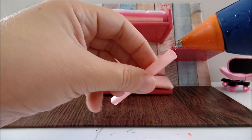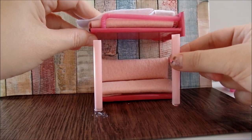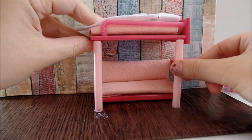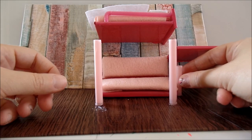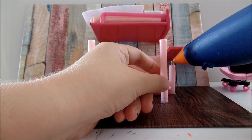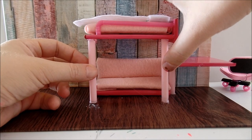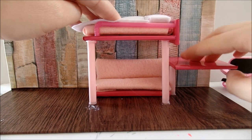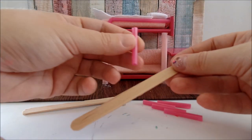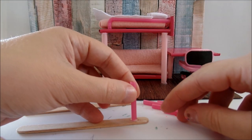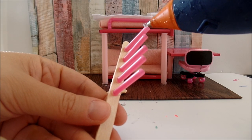For support you can use jumbo straws and you can first glue them on the floor, then glue on the top. For the stairs I will use two popsicle sticks and these pieces of straw. Now add glue and glue the second popsicle stick.